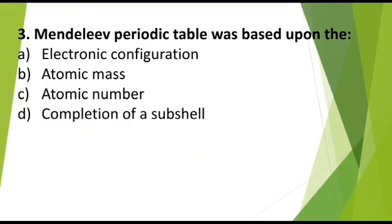MCQ 3. Mendeleev's periodic table was based upon the: a) Electronic configuration, b) Atomic mass, c) Atomic number, d) Completion of a subshell. Correct answer is atomic mass.